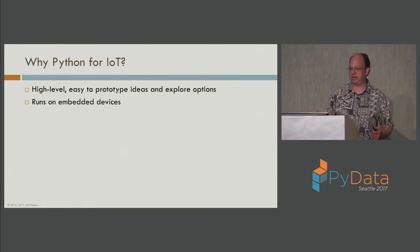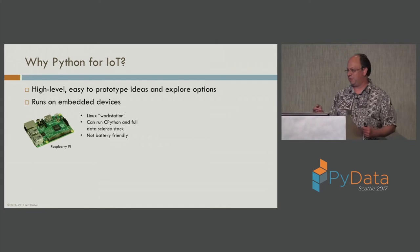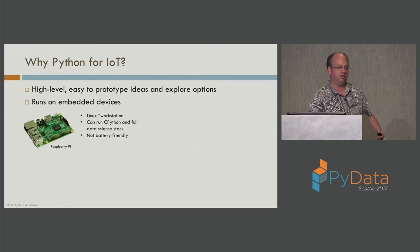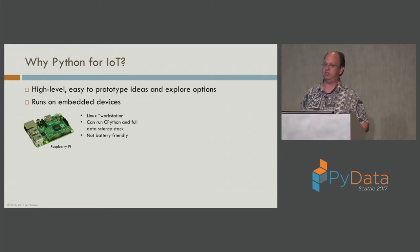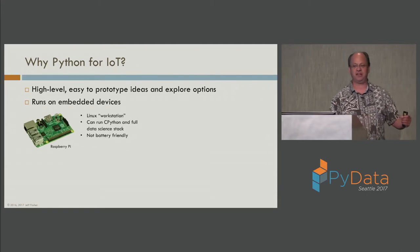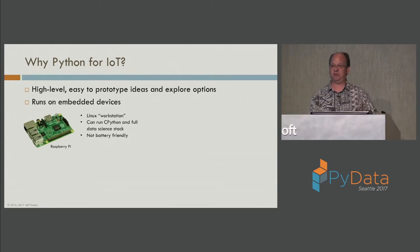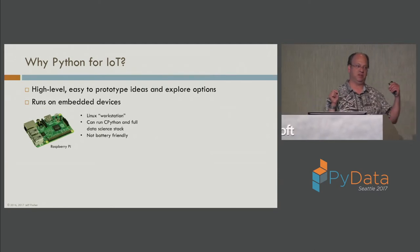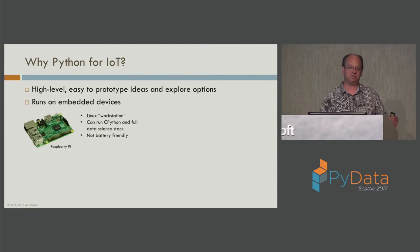Python actually runs on embedded devices, depending on your definition of embedded device. The Raspberry Pi was started as a project for kids to use as a personal computer, but it has all these I/O interconnections called GPIO — general purpose I/O — so you can hook all kinds of sensors and actuators up to your Raspberry Pi. The Raspberry Pi is really a Linux workstation, and you can run the full data science stack on it.